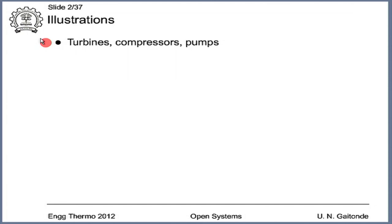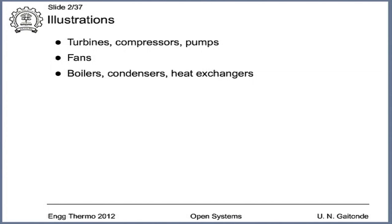For mechanical engineers, particularly thermal engineers, the illustrations begin with turbines, compressors, and pumps including fans. Then boilers, condensers, and heat exchangers. The first category includes power consumption devices like compressors and pumps, power delivery devices like turbines, fluid movement devices like fans, and significant heat transfer devices like boilers, condensers, and heat exchangers. There are also simple situations such as ducts — fluid flowing through a duct of various lengths and types — which are also open systems.